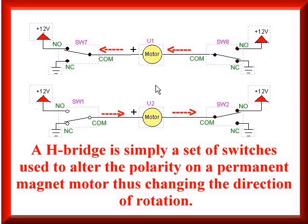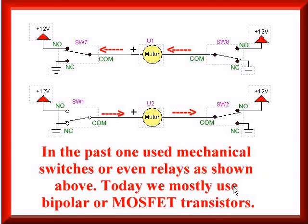Current flow in these explanations is from negative to positive. In the past, of course, they used mechanical switches or even relays as shown above. Today we use bipolar or MOSFET transistors. Here we're going to use bipolar transistors in the Darlington configuration. And we'll look at how to extend this to even using non-Darlington transistors.